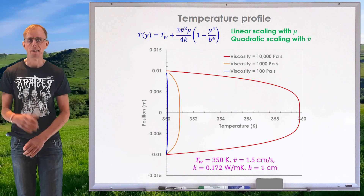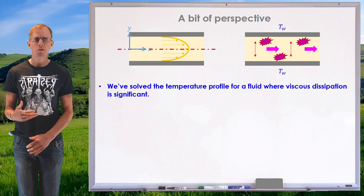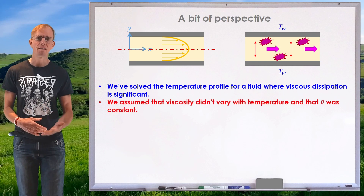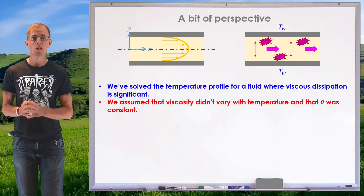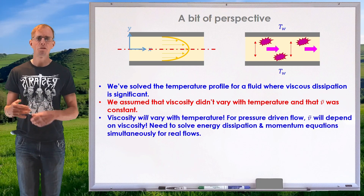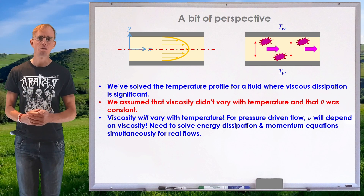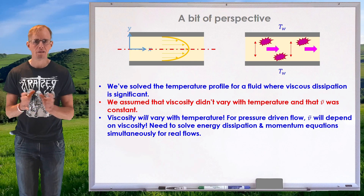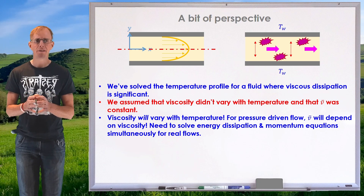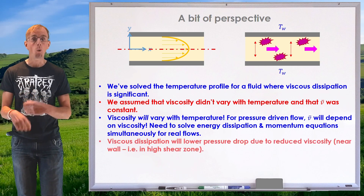Let's put all this into context. We've looked at the temperature profile for a very viscous fluid with viscous dissipation significant, assuming viscosity didn't vary with temperature to get the analytical solution, and that average velocity was constant. For a real pressure-driven flow, velocity depends on viscosity, and viscosity depends on temperature. So if viscous dissipation is present, we need to solve the energy and momentum equations simultaneously whilst also maintaining a temperature-dependent viscosity — a very highly coupled problem, which is why we do the Nahme-Griffith analysis to decide whether we can safely neglect it.